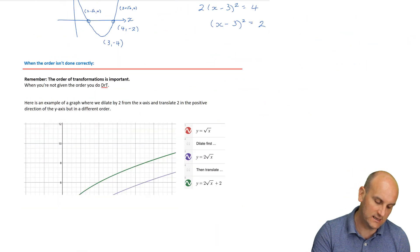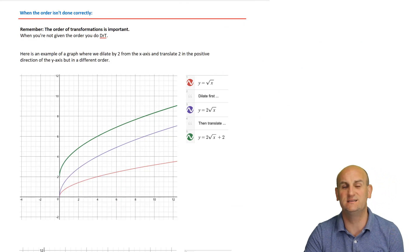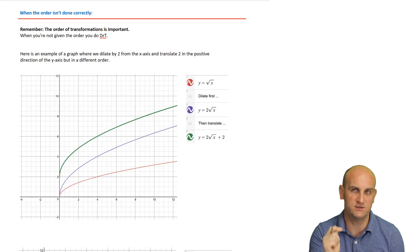Now, I said at the start of the video, I was going to come back and tell you what happens when the order isn't done correctly. Now, when I say correctly, if the order isn't given in the question, you must, must, must follow Dr. T. All right. So it must be dilations first, then reflections and then translations. So what I've done here, I've got a graph of the square root of X and I have subjected it to two transformations. One of them is a dilation of two from the X axis and one of them is a translation two in the positive direction of the Y axis.